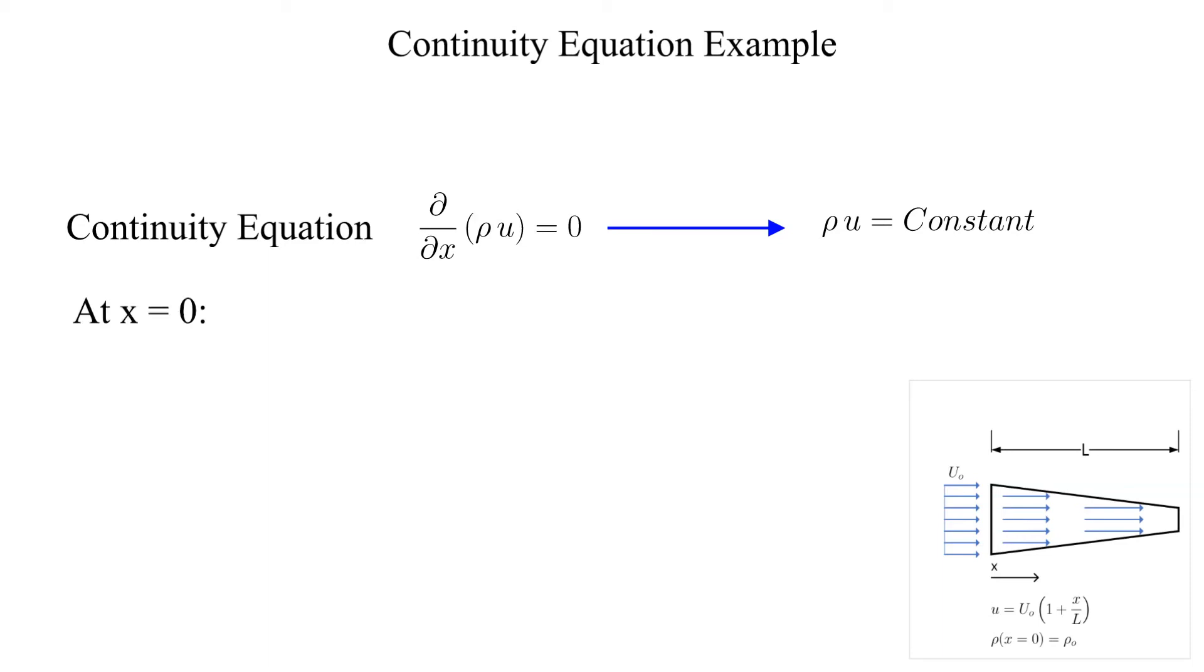At x equals zero we know both the x component of velocity denoted as u naught and the density which is given as rho naught. The quantity rho naught times u naught is constant throughout the nozzle. Setting the product of the density times the velocity equal to this constant allows us to solve for the density as a function of x.